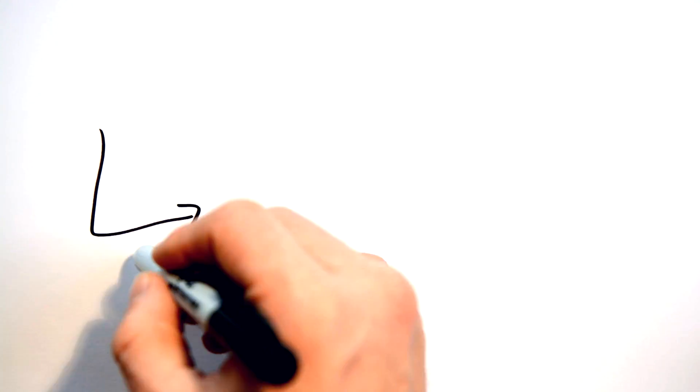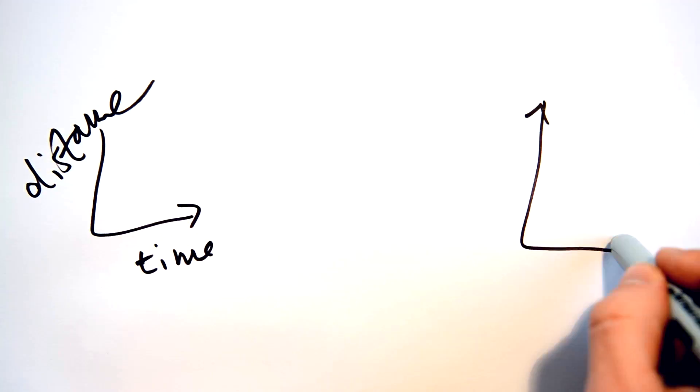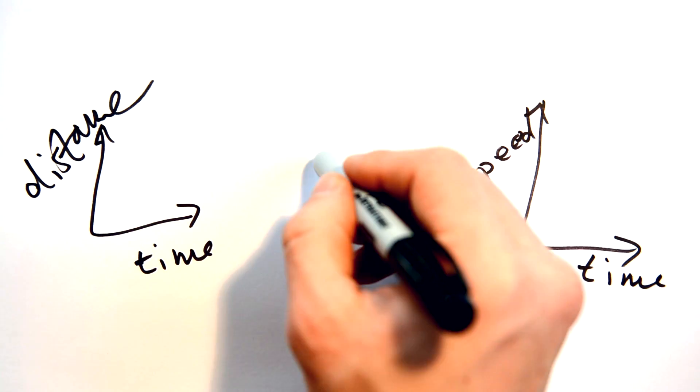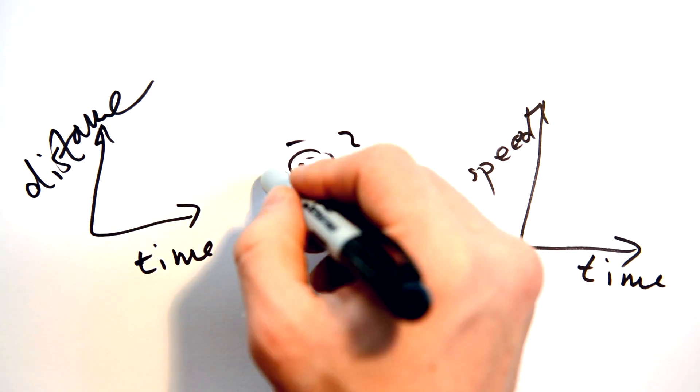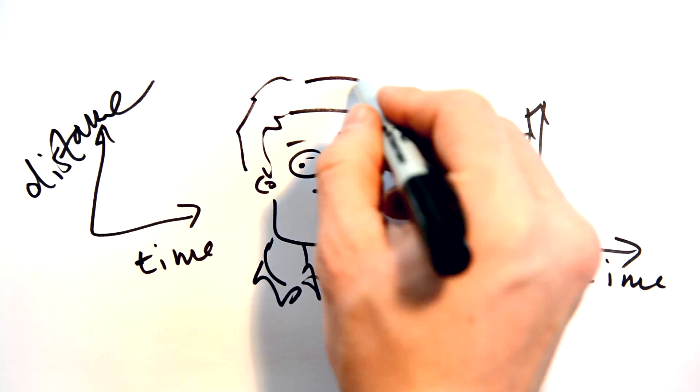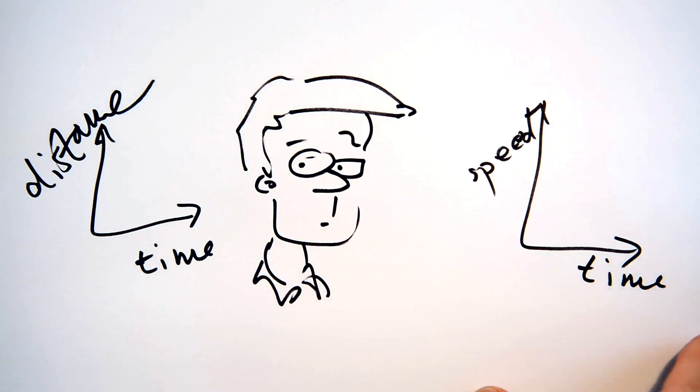It's ridiculously easy to get mixed up between distance time graphs and speed time graphs. If you're not concentrating you can trip up and in your exam lose out on some easy marks. That's why it's been split up into two videos here.